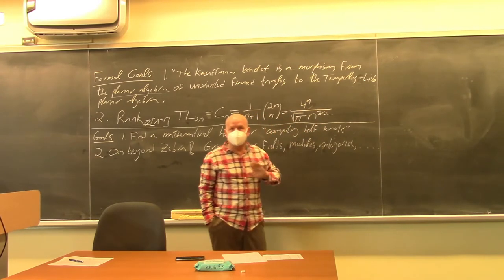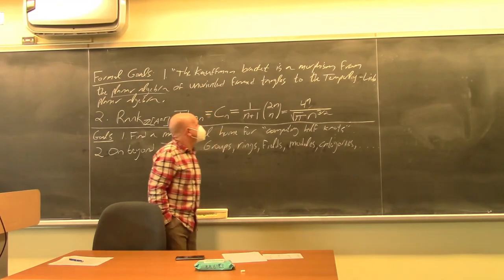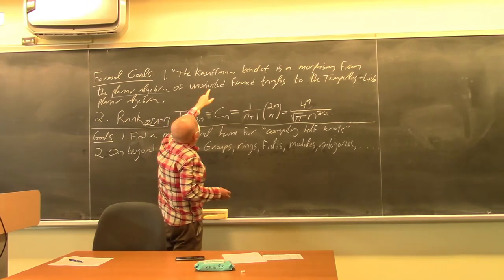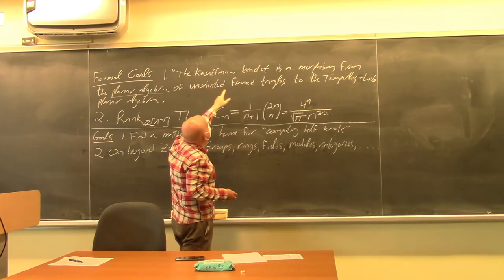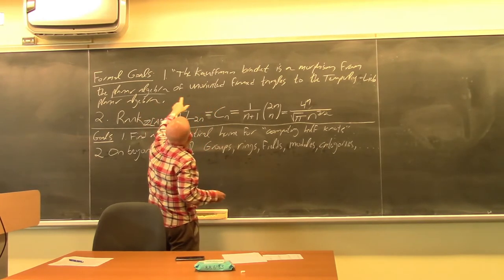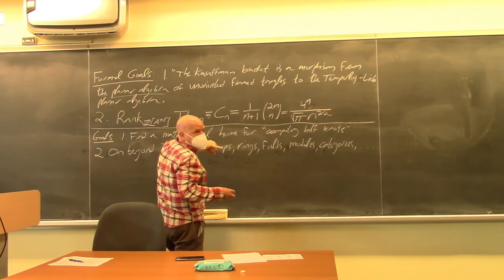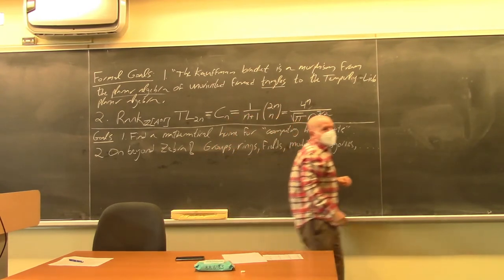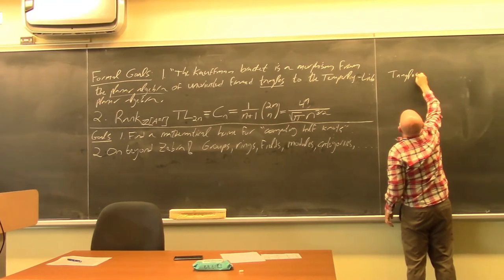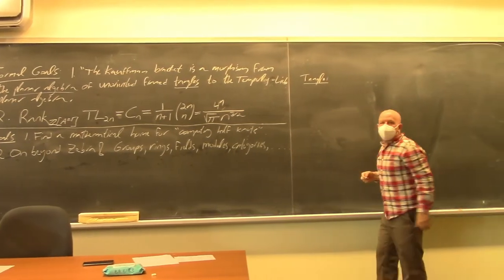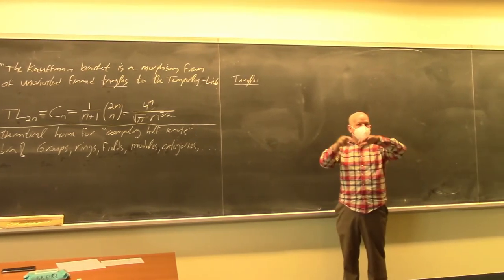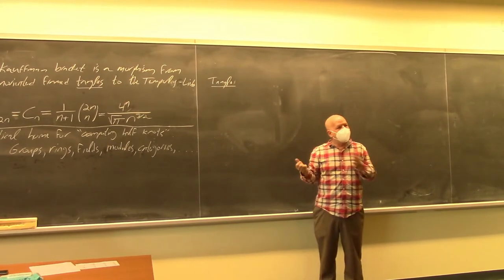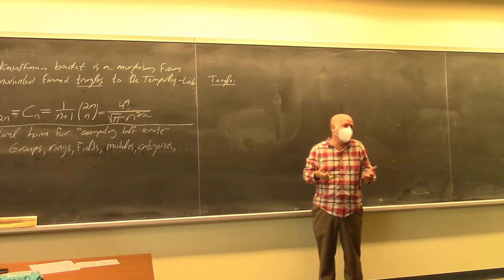The Kauffman bracket is supposed to be a morphism from the planar algebra of unoriented framed tangles. So let's go in order: what are tangles? A knot is a curve in the plane, and a tangle is half of a curve in half of the plane.